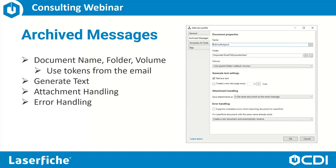Under Attachment Handling, we have various options. We can choose to include the attachments in the same document as the email message, separate those attachments into separate documents in the repository, leave the attachments in the same email message but also file them as a separate document, or separate the attachments and discard the email message entirely — if we don't care about the email and just want the attached files imported into our repository.